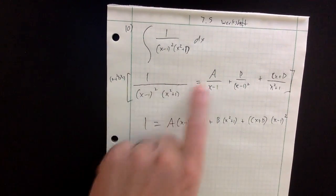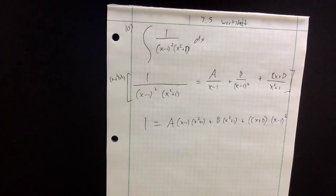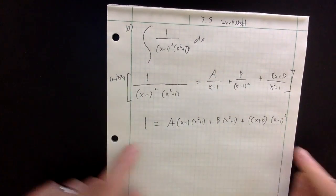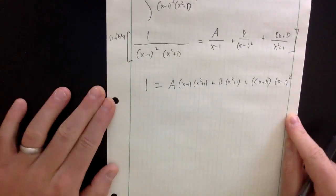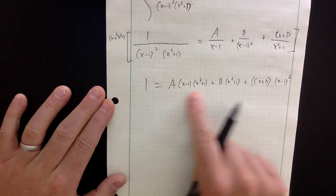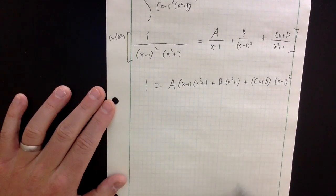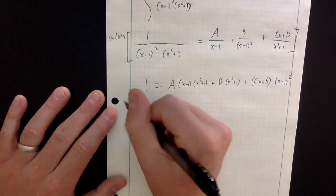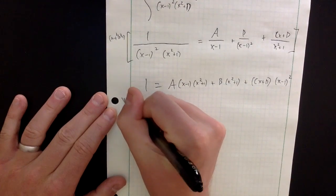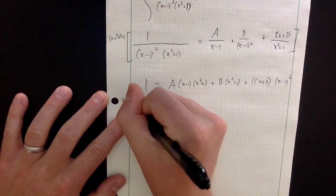If it helps, expand everything completely to see how we arrive at this. Now I need to figure out my variables A, B, C, and D. This equation should hold for any value of x, so I start plugging in values for x.